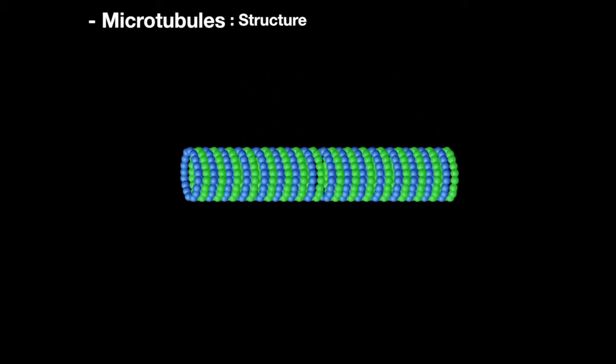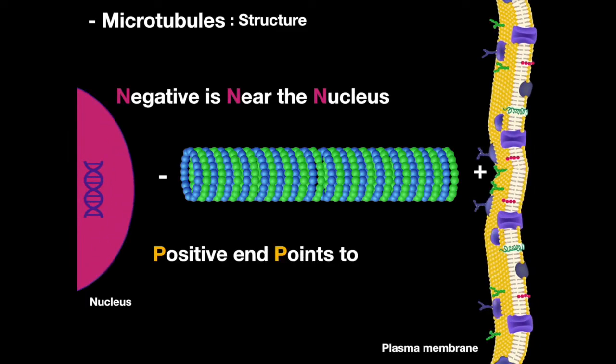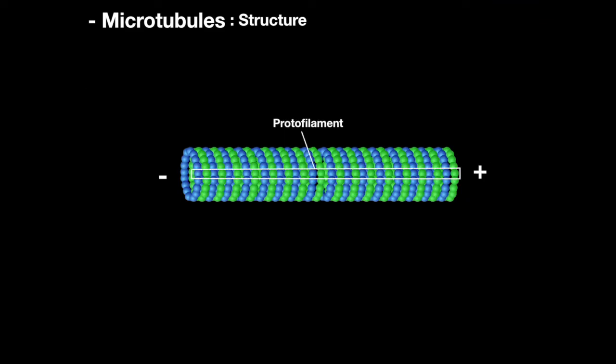The microtubules are polar with a positive and negative end. The negative end is near the nucleus, and the positive end points to the periphery. This section here is called a protofilament. Because it has two charged ends, this enables proteins to travel directionally along the microtubules.